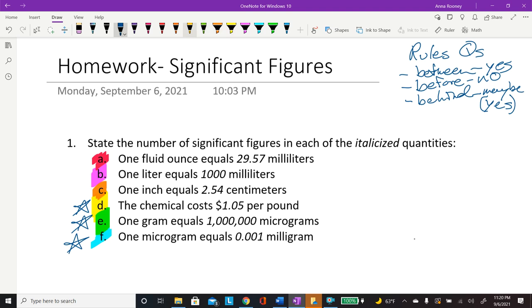And then if you want to stick around, you can, in fact, do A, B, and C with me. So this one has a zero in it. So is this before, behind, or between? It is between. So that is a significant figure. So there are three significant figures with that one.